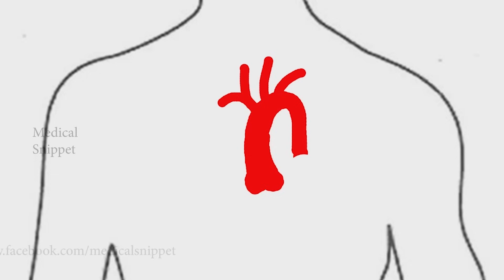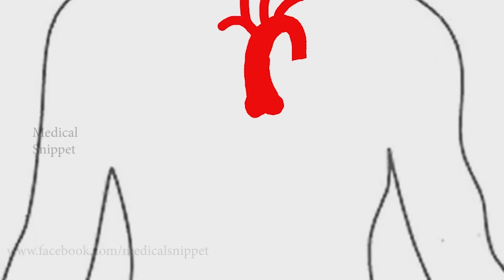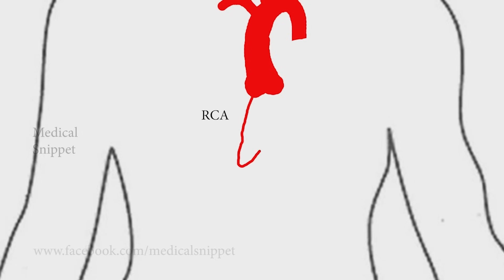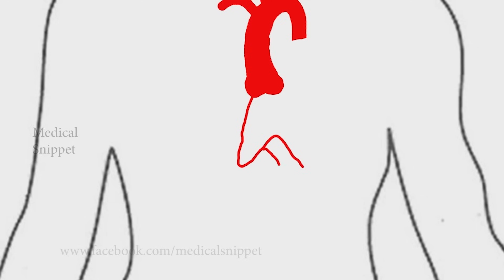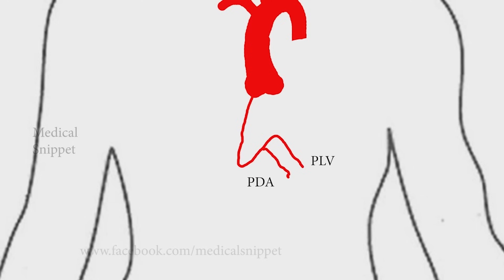Let's for a moment remove the descending thoracic aorta to see the coronary arteries. The right coronary artery courses along the atrioventricular groove. It gives rise to the posterior descending artery, posterolateral ventricular branches, and also gives acute marginal branches.